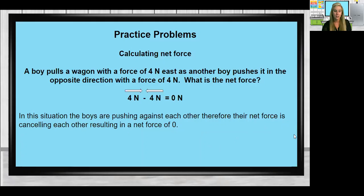Here is some practice problems calculating net force. So if a boy pulls on a wagon with a force of 4 Newtons east and another boy pushes it in the opposite direction with a force of 4 Newtons, what is the net force? So in this situation because they're going in opposite directions I have to subtract and they're both pushing with the same force. So 4 minus 4 is 0.